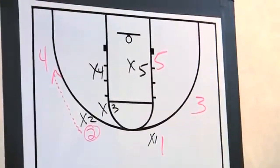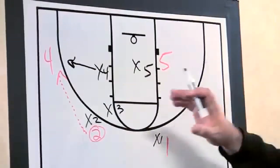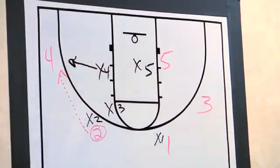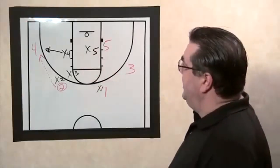So when the pass is made to number four, X4 is going to slide out and guard that. Hands high and a good defensive stance. If number four is not a great shooter they don't need to go any farther than the three-point line, could even sag in a little bit more.